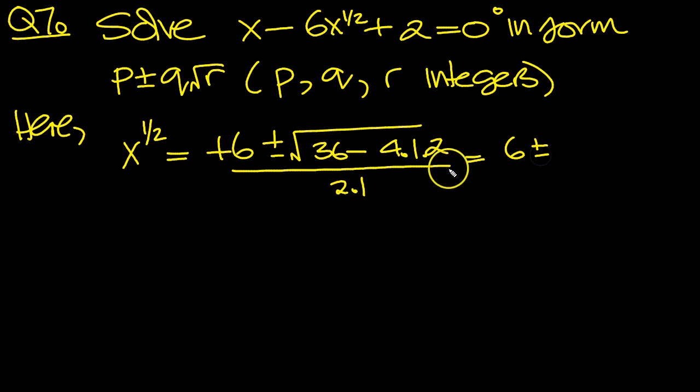So x to the half is equal to 6 plus or minus 36 minus 8. 36 take 8 is 28, so square root of 28 over 2.